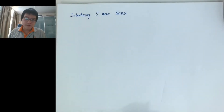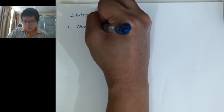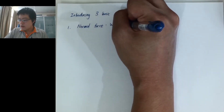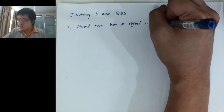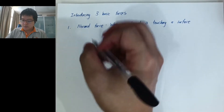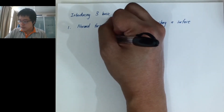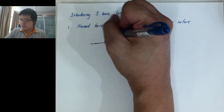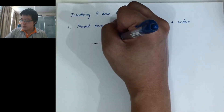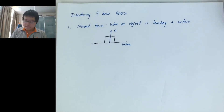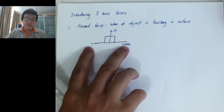Part one: three basic forces. The first one is the normal force. Normal force happens when an object is touching a surface. For example, I have a box sitting on the ground — there's going to be a normal force. The normal force acts from the ground toward the box. Its direction depends on the surface: if the surface is tilted, the normal force is no longer pointing straight up.